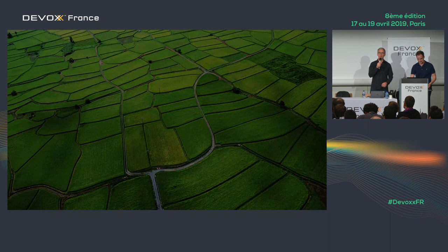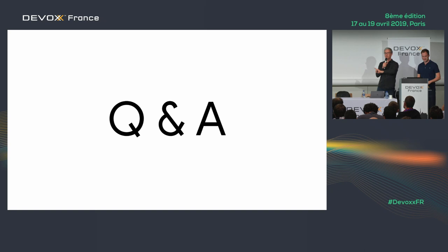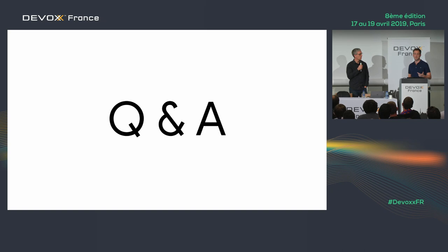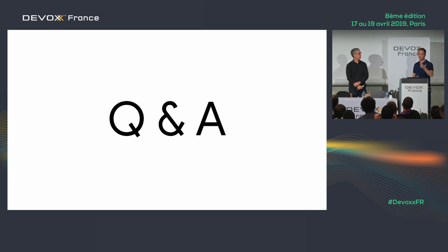That is all for the talk. We're happy to take a question. Regarding whether we've raised these issues with the Kotlin team: yes, we work closely with them, they're aware of many of these. We have people working on the Kotlin compiler at Google, specifically on the Android team. On Android, we also have R8, an optimizer similar to ProGuard, which will optimize some of these issues, and ProGuard will likely do the same. Thank you very much.